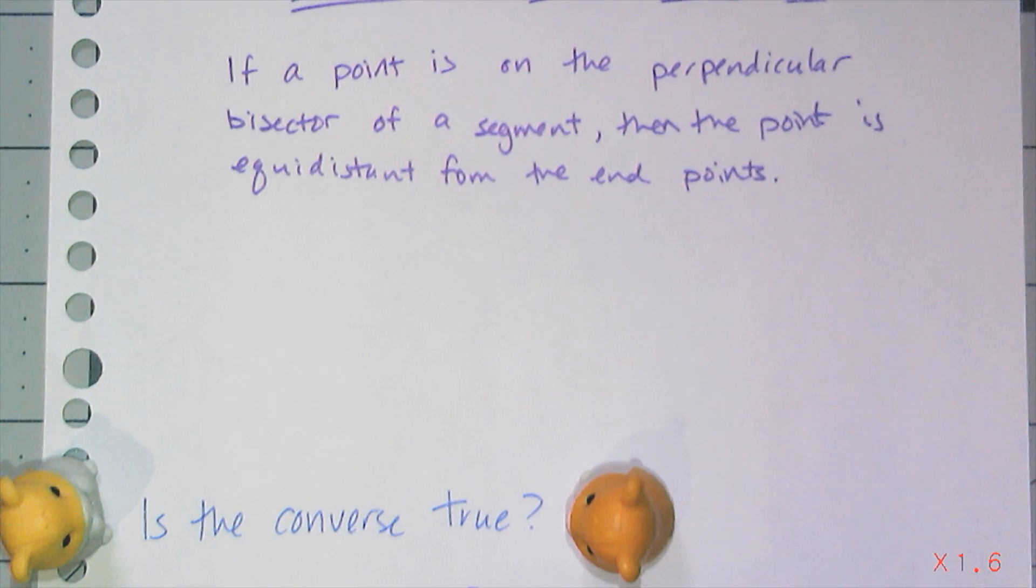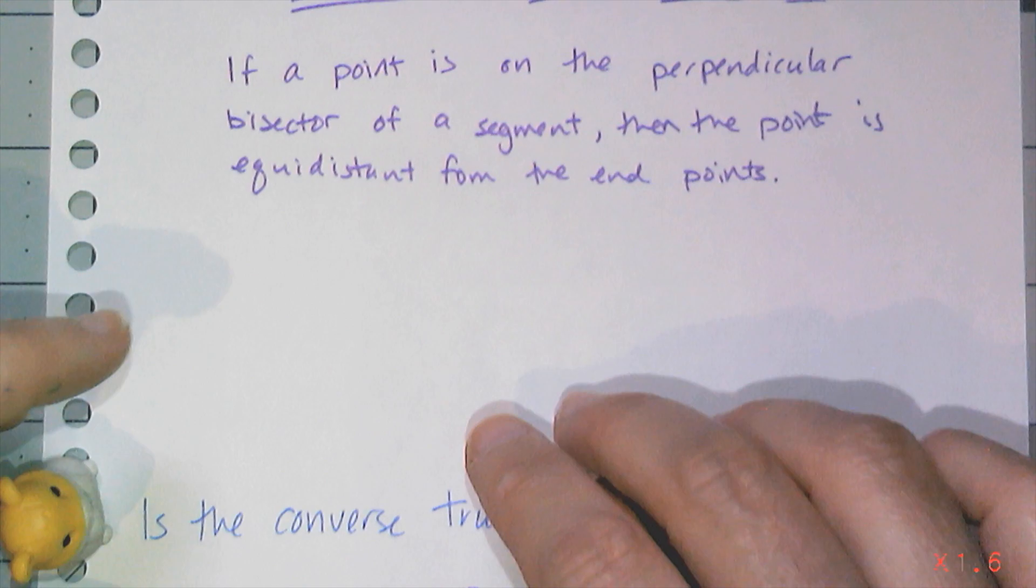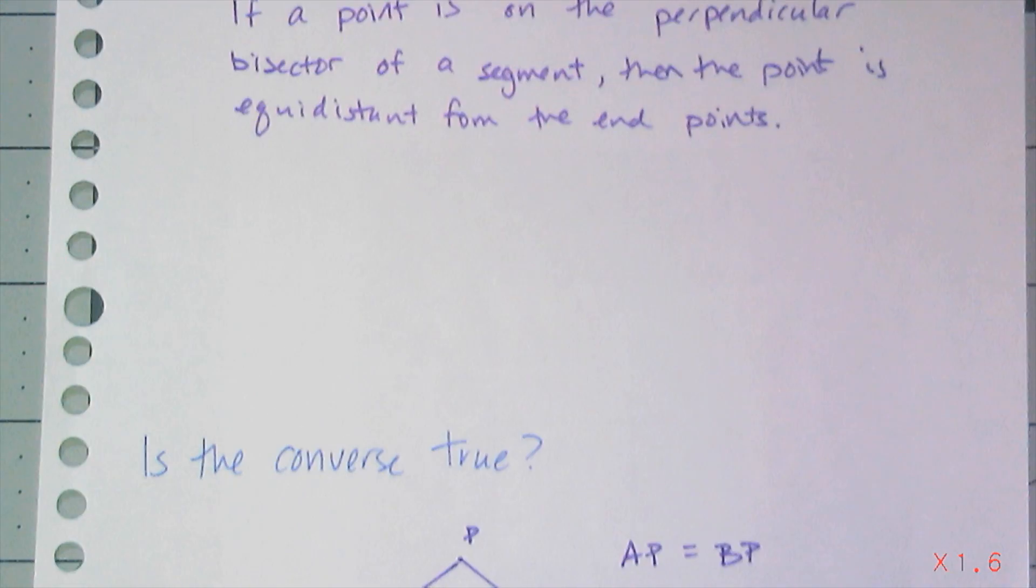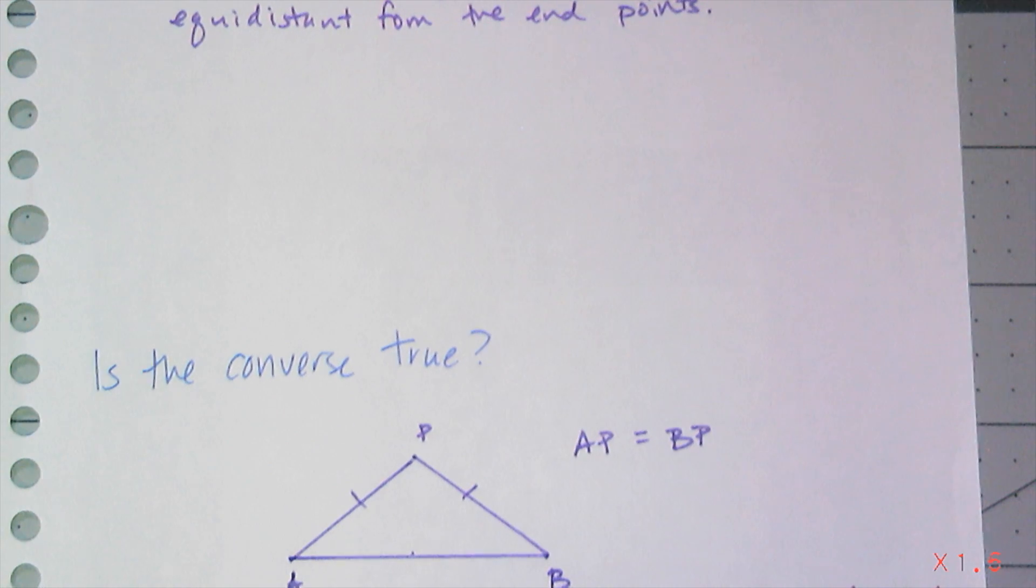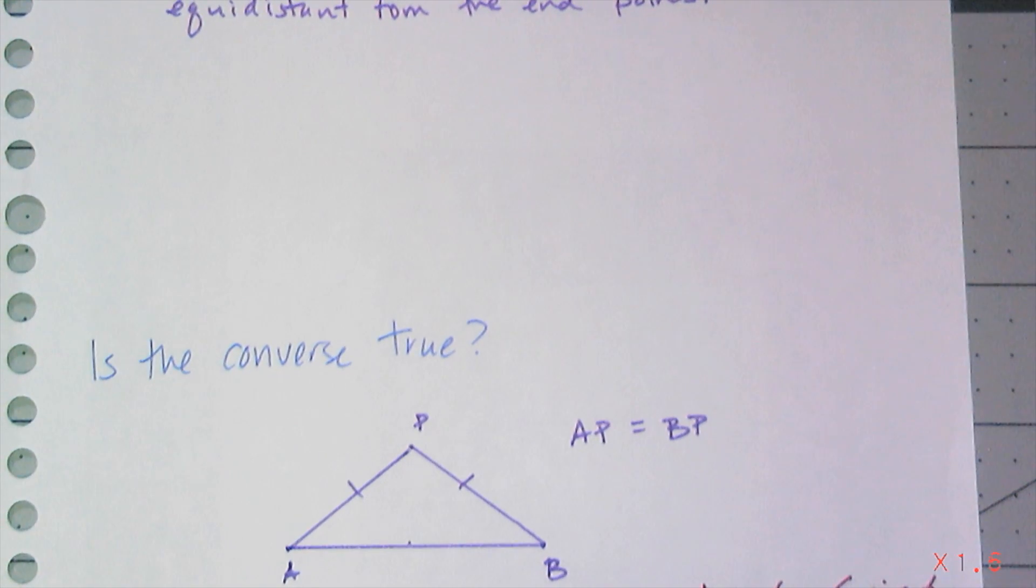As I said in previous videos, if I have a conjecture, I want to always ask myself, is the converse true? And so if I think about this scenario, where I have some point that is not on a line segment, but that point is the same distance away from both of the endpoints of a line segment, so AP is equal to BP in terms of length, is this point P on the perpendicular bisector?